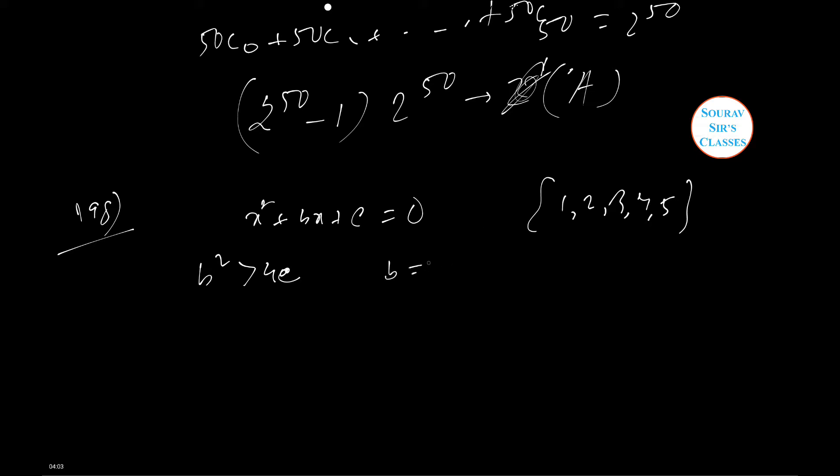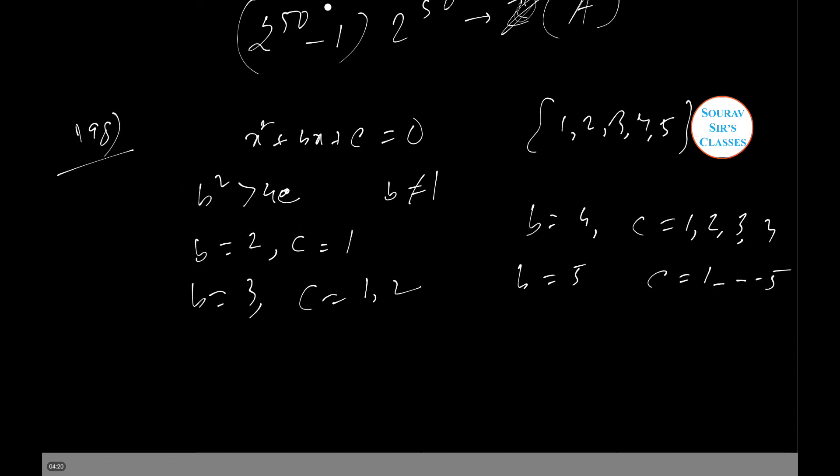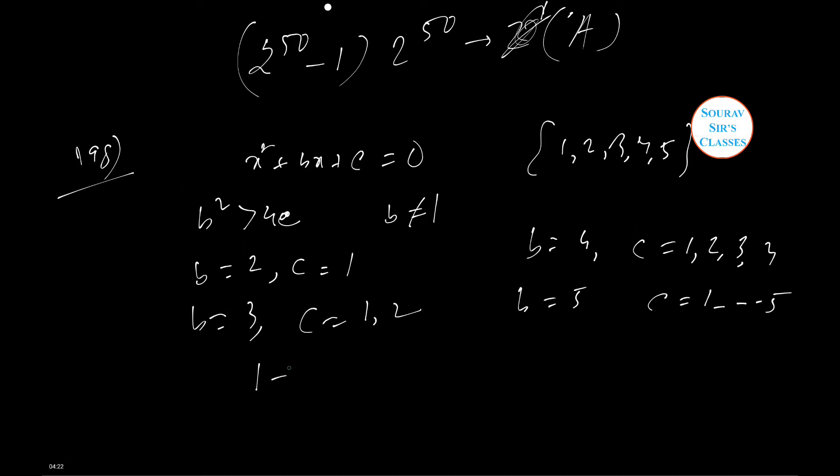If b = 2, c = 1. If b = 3, c has 2 possible values (1 and 2). If b = 4, c has values 1, 2, 3, 4. If b = 5, c has values 1 to 5. Total number of equations is 1 + 2 + 4 + 5 = 12. Option C is correct.